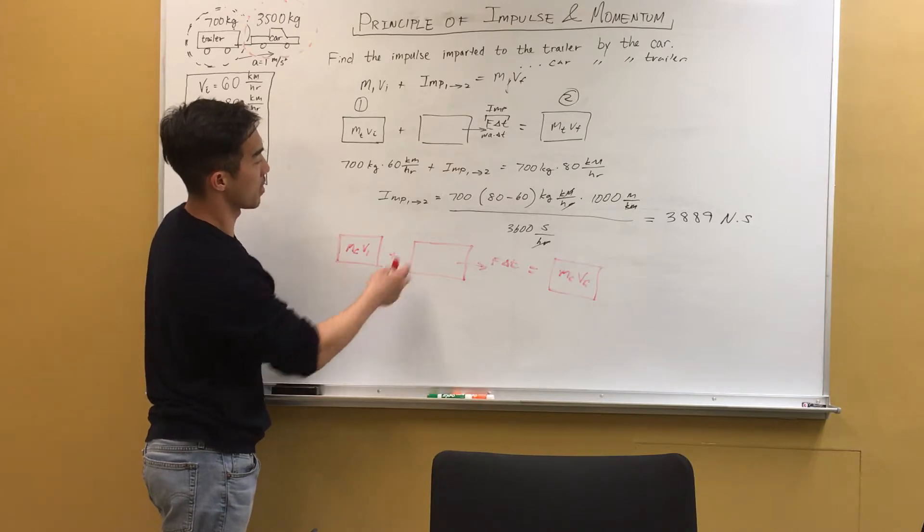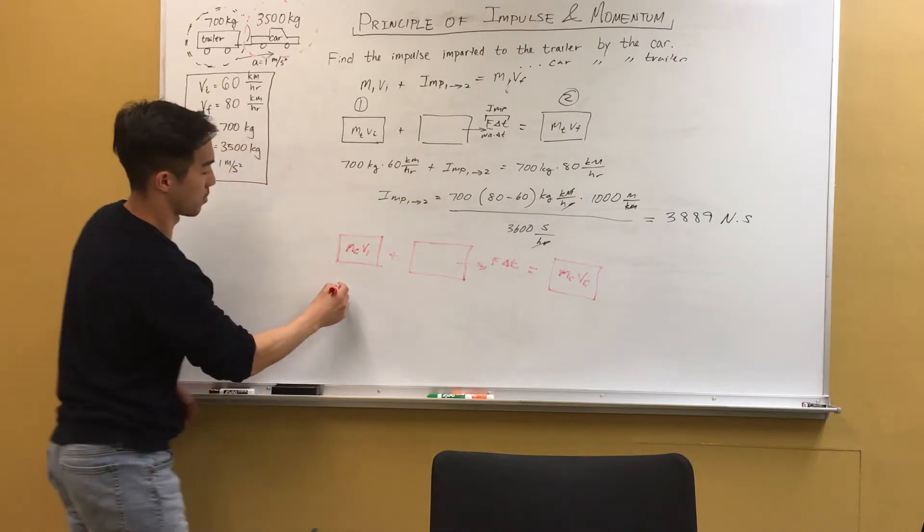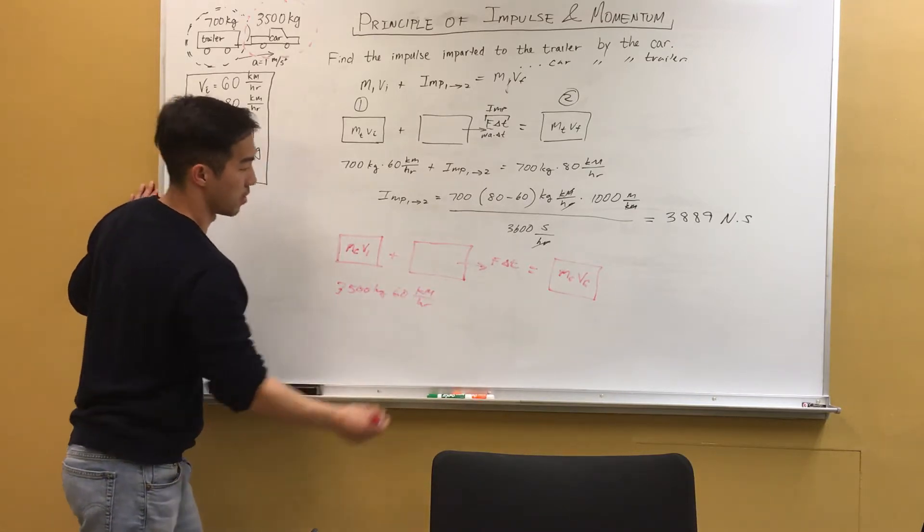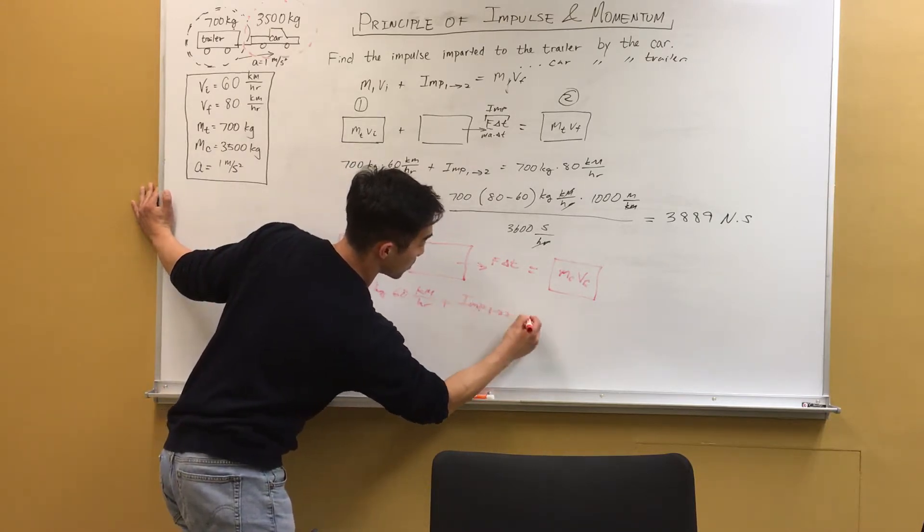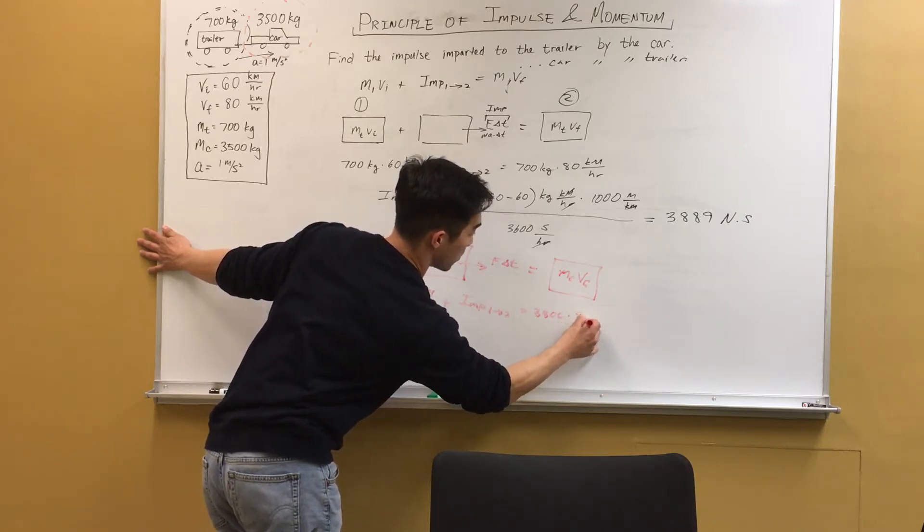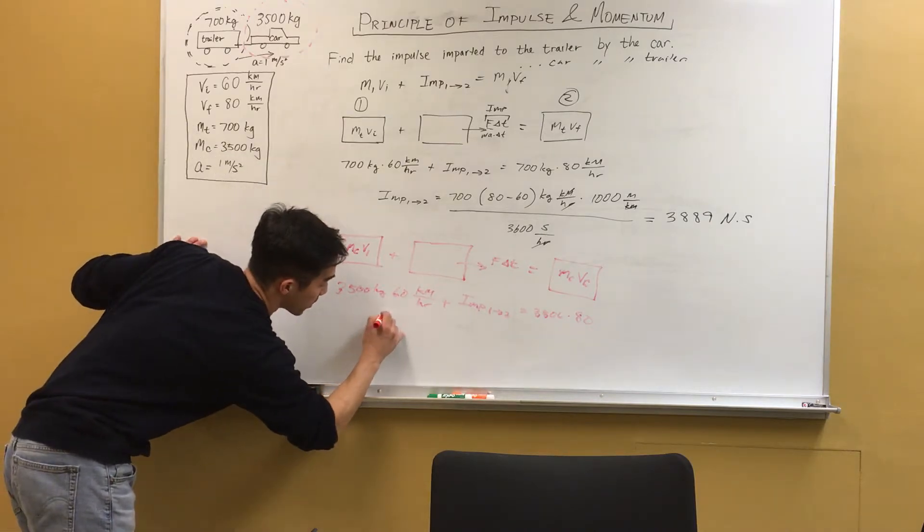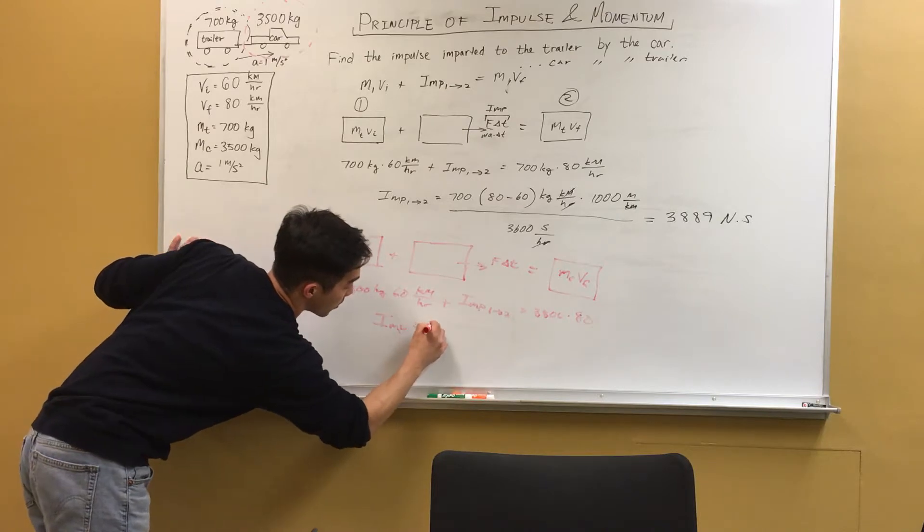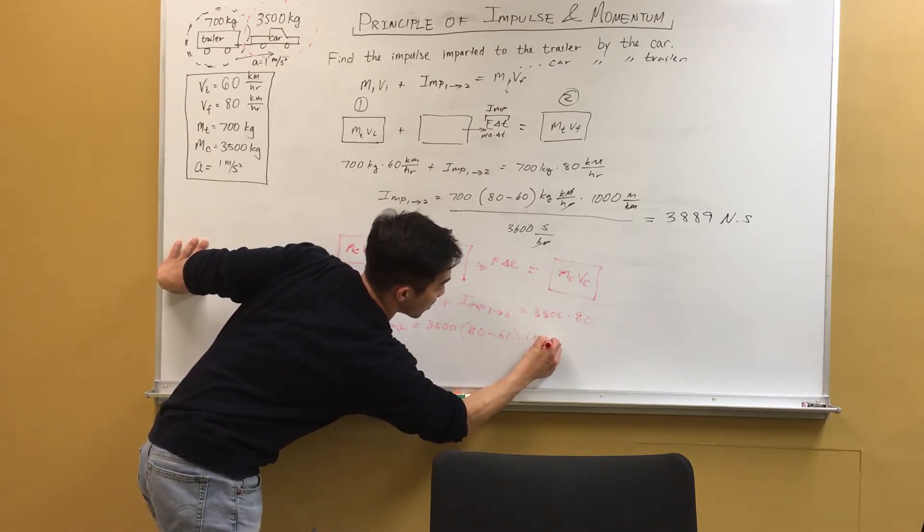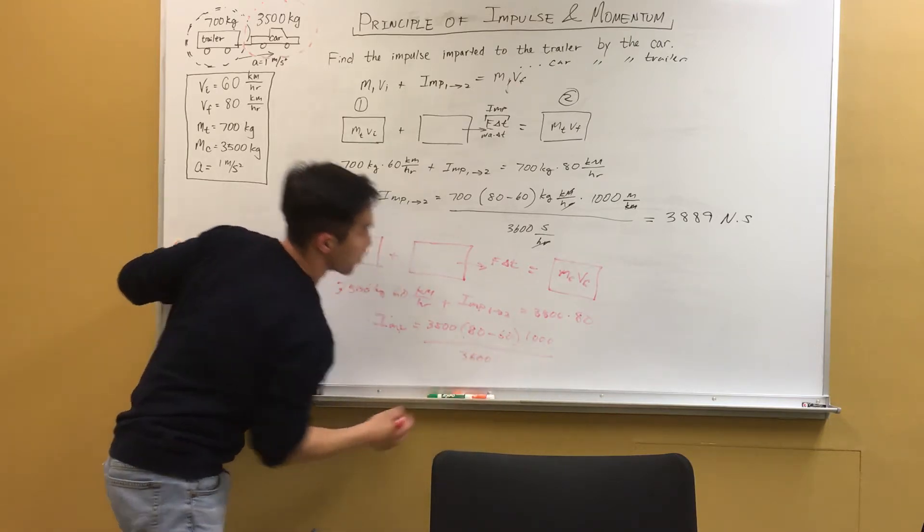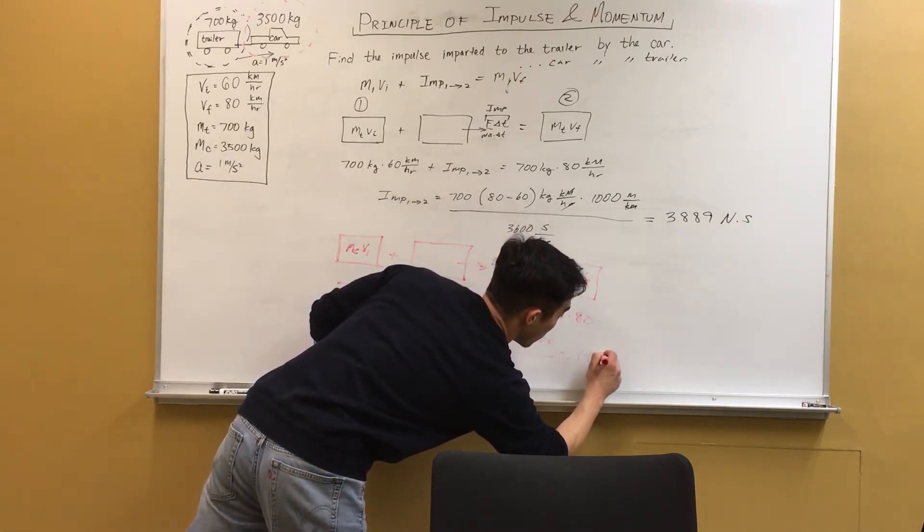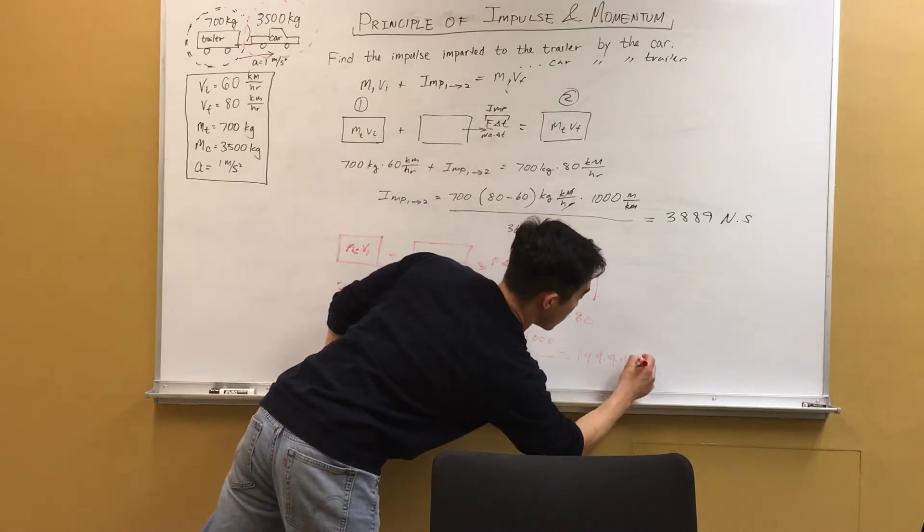So now we just plug in the values again and isolate the impulse. So this will be 3,500 kg times 60 kilometers per hour plus impulse 1 to 2 equals 3,500 times 80. And if we isolate the impulse term, we get 3,500 times 80 minus 60 times 1,000 divided by 3,600 for unit conversion. And that comes out to be 19,444 newton seconds.